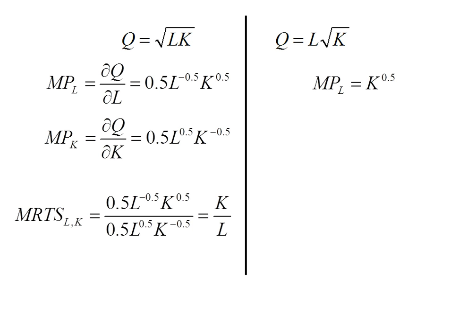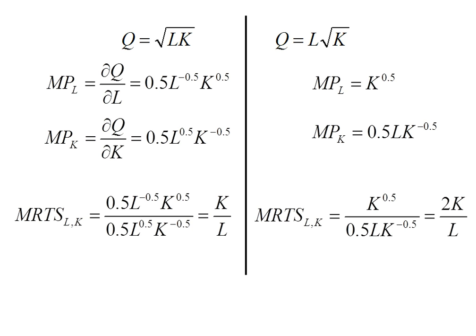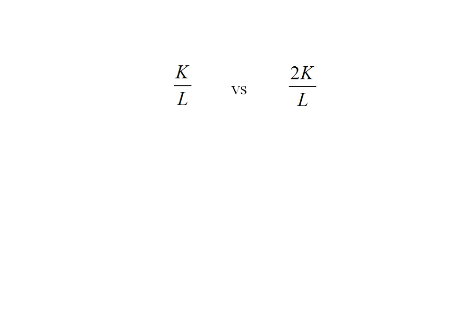I need the same things for my new production function, and I get 2K over L. So my original production function had an MRTS of K over L, and my new one has 2K over L.